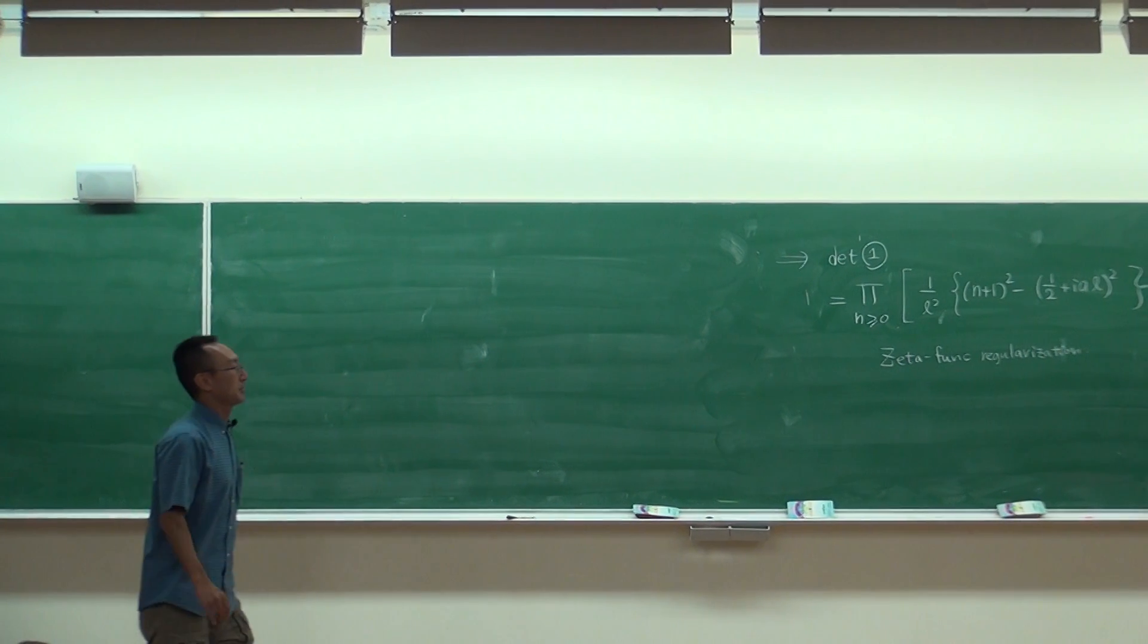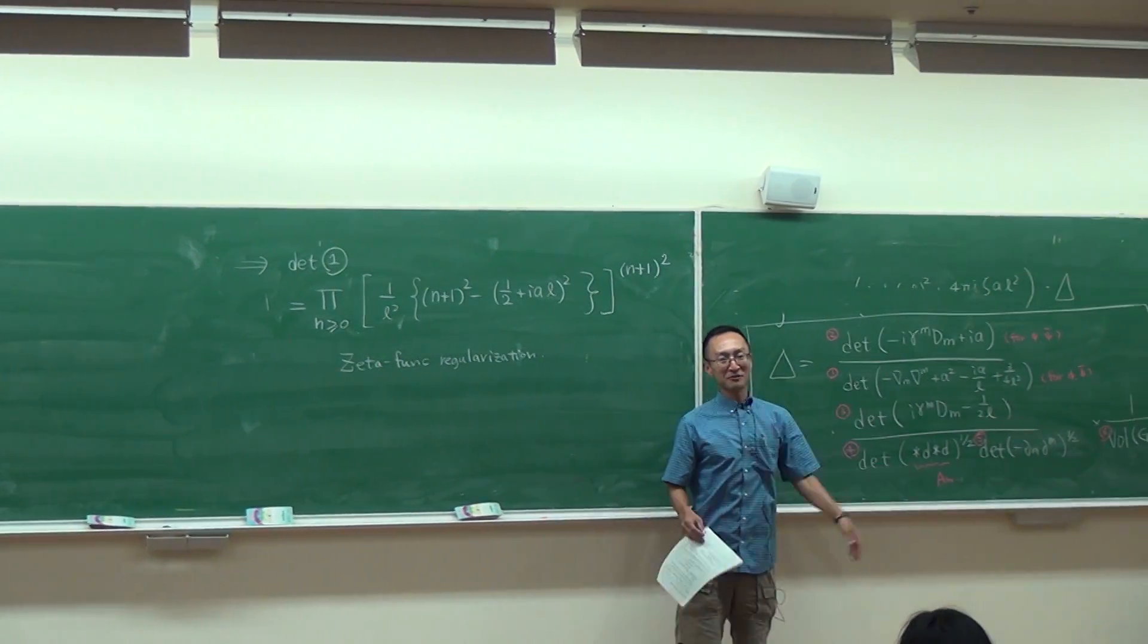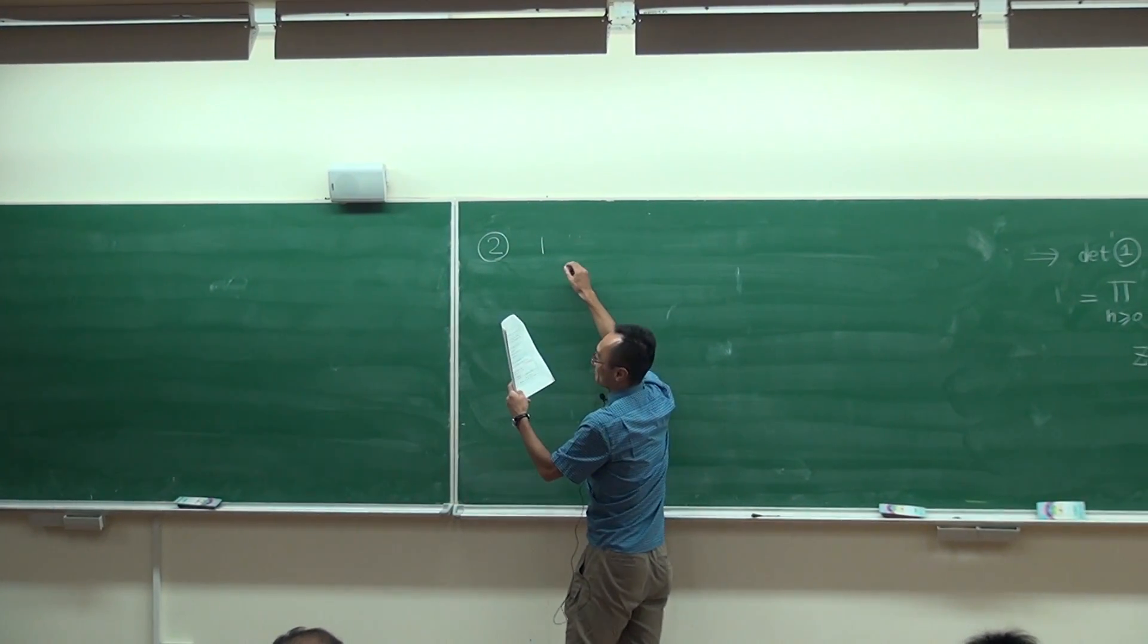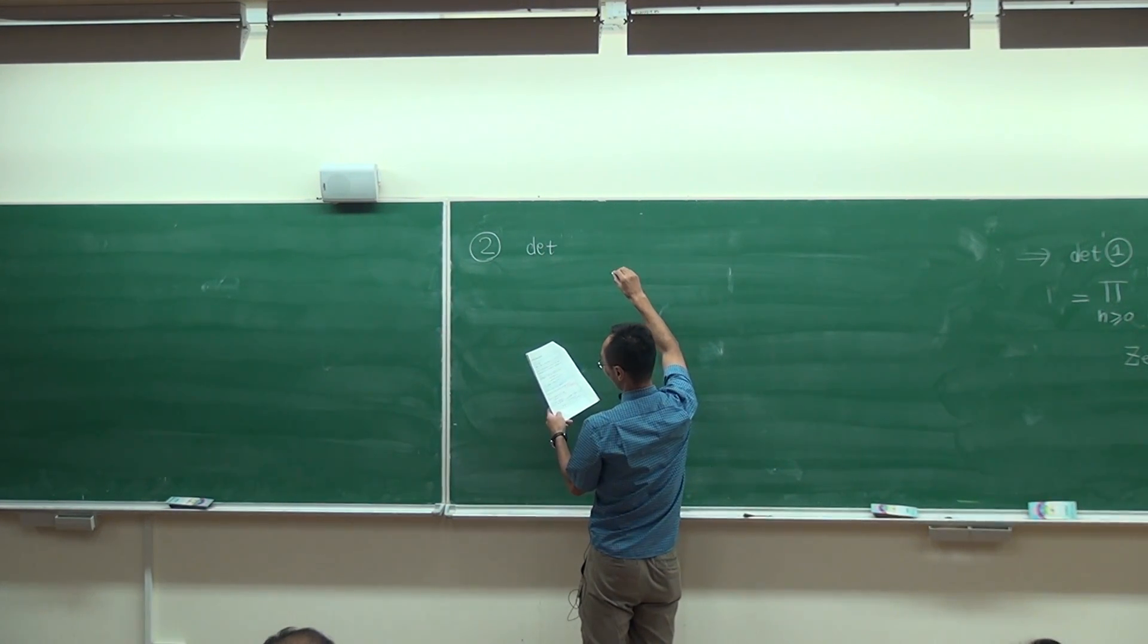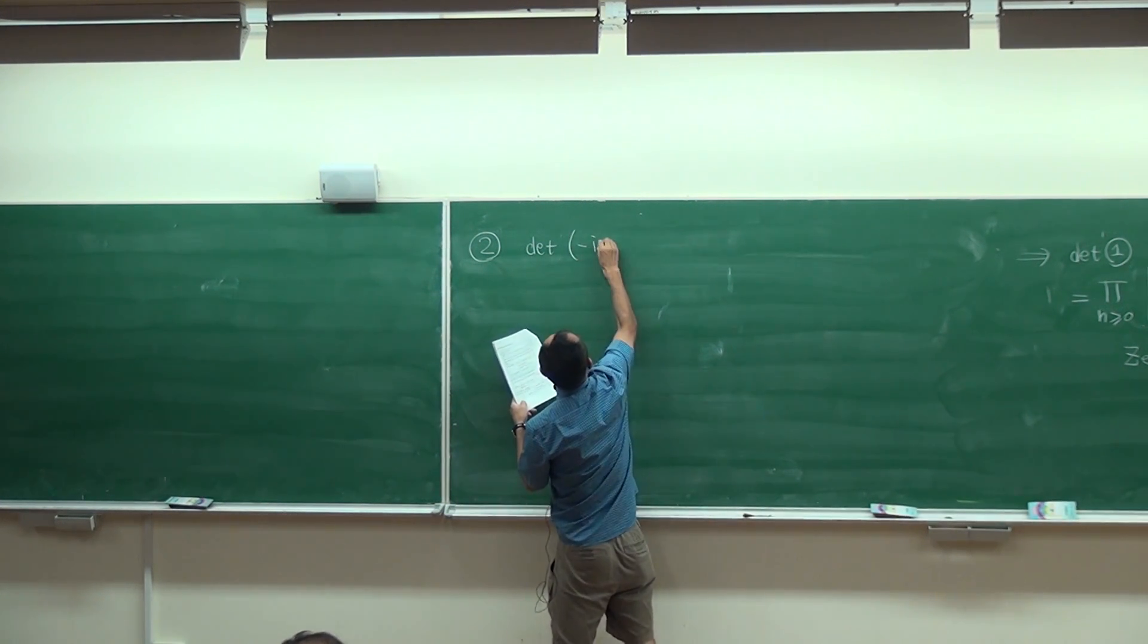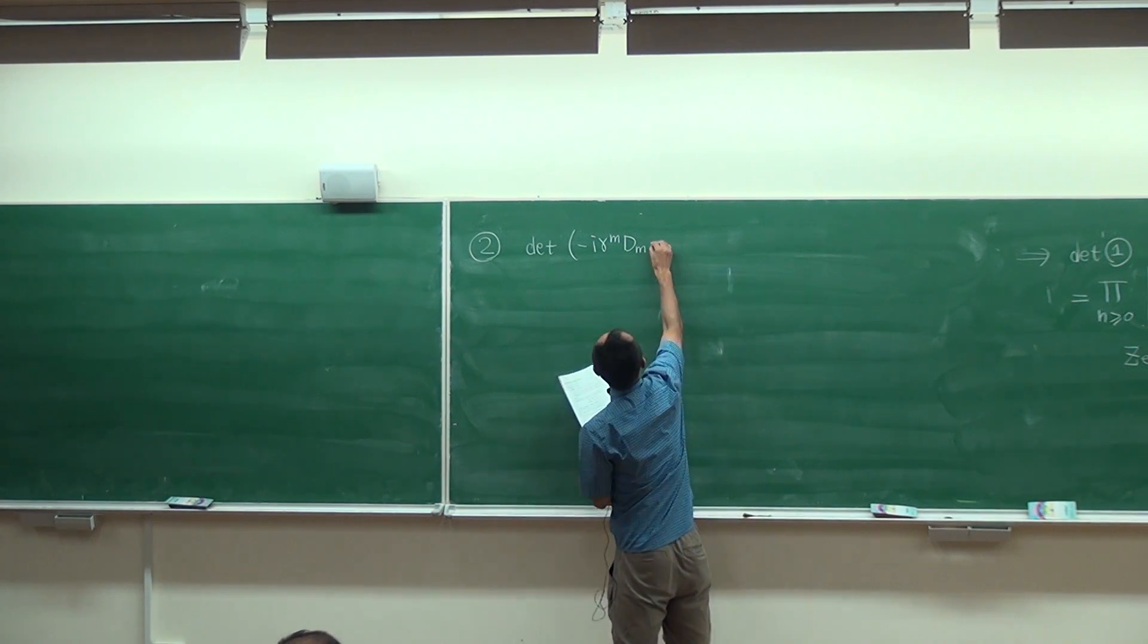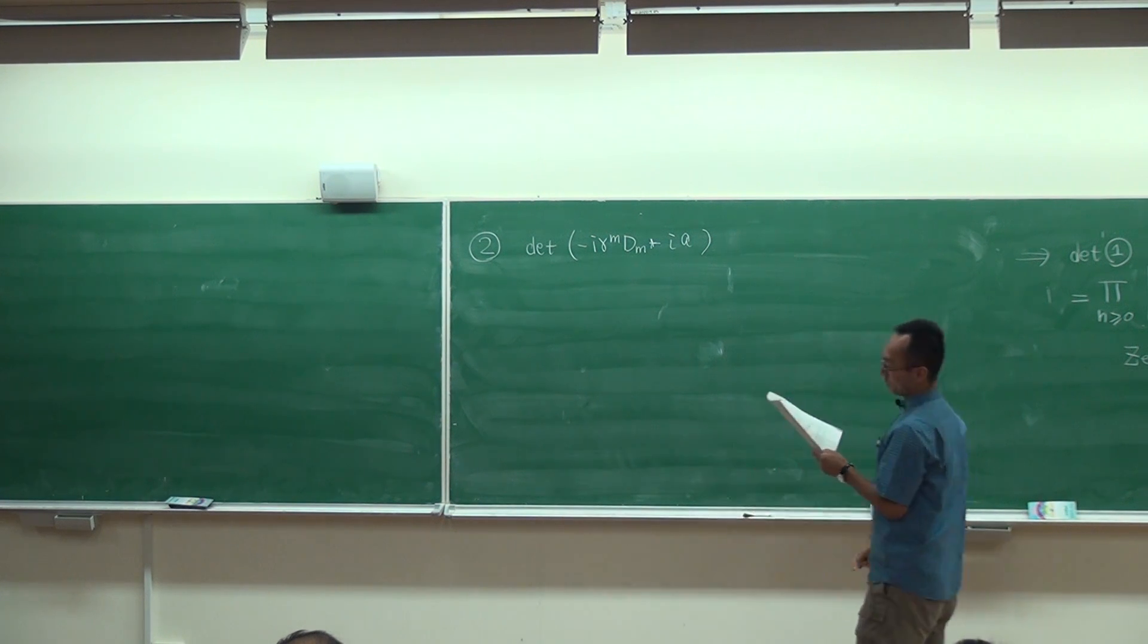But before doing that, let me explain to you how to compute this Dirac determinant. Although this is purely a math exercise, it's amusing to see how this can be computed by just using SU(2) commutators. So this is what I would like to compute.